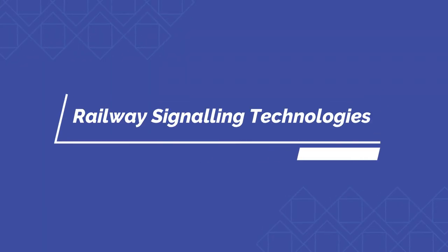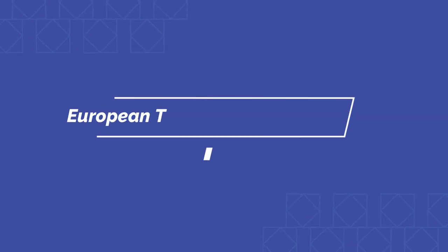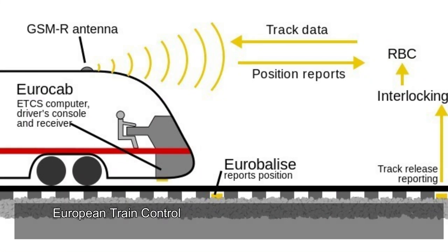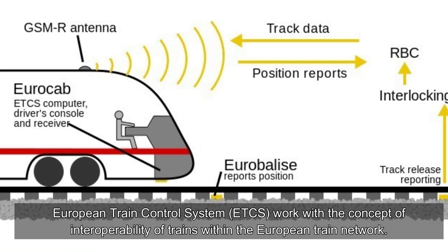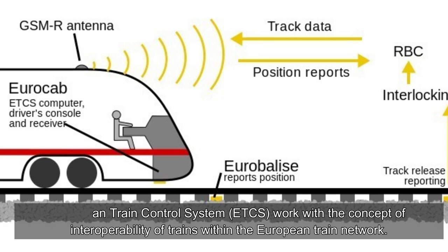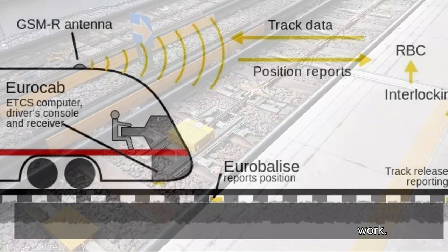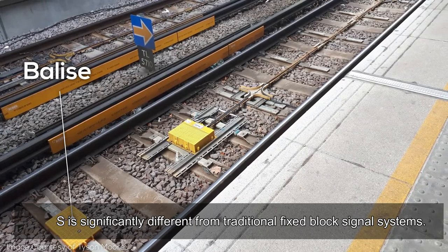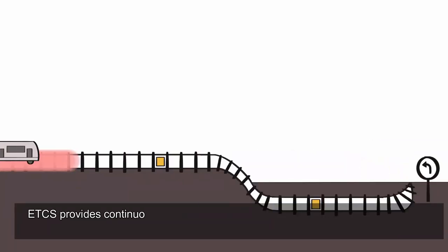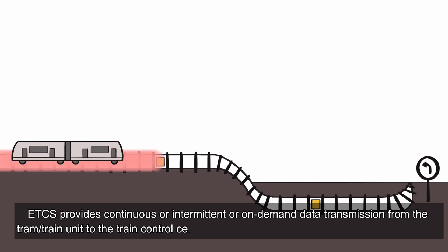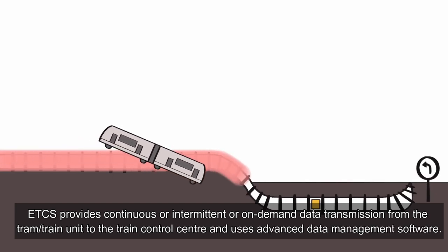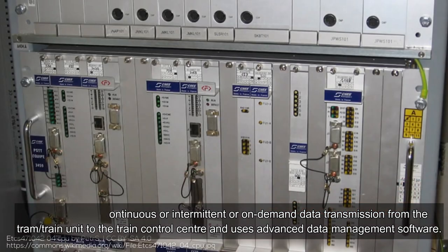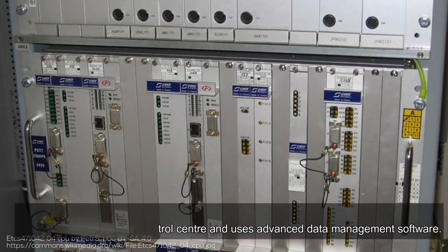Railway signaling technologies. European Train Control System, ETCS, works with the concept of interoperability of trains within the European train network. ETCS is significantly different from traditional fixed block signal systems. It provides continuous, intermittent, or on-demand data transmission from the train unit to the train control center and uses advanced data management software.